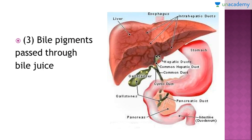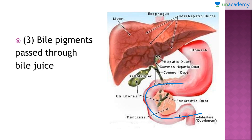Bile pigments passed through the bile juice make the stool yellow in color. In the diagram you can see the gallbladder, and through the cystic duct it passes bile juice into the duodenum part of the small intestine. This is where the digested milk converts yellowish in color, resulting in the yellow color of the stool.